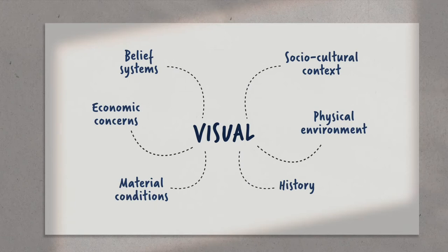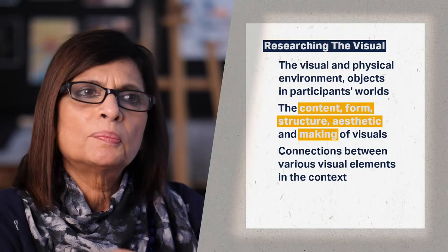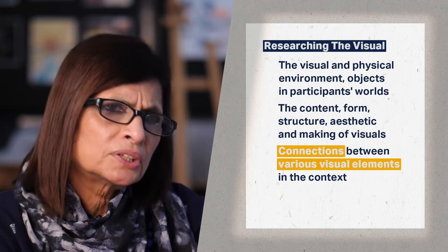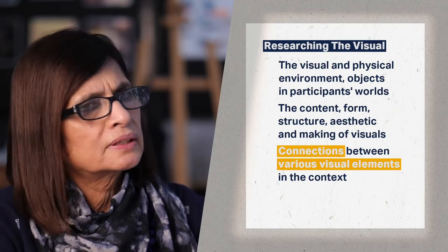As we read visuals and the act of making them, we are able to draw connections between the visual and its context. Making these connections, we learn about the larger socio-cultural and economic structures in which the visual exists. And we learn about the meanings individual participants associate with the visual. There is another aspect to researching the visual: we pay attention to the content, form and aesthetic of the visual. We draw connections between a particular visual and the other visual elements in the environment. By drawing these connections, we try to understand the visual culture — or what we may call the visual language — of our participants' world.